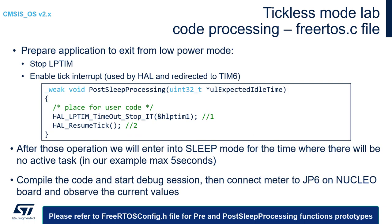In case all active tasks are sent to blocked state for a longer time, such as 5000 milliseconds in our example, we can observe an intermediate wake-up of the system after 4194 milliseconds, then re-entering low-power mode for the remaining sleep time. This is handled automatically by the FreeRTOS tickless mode implementation. The next step within FreeRTOS.c file is to prepare the application to exit from low-power mode — done within the postSleepProcessing function in two steps.